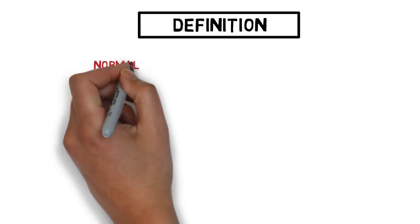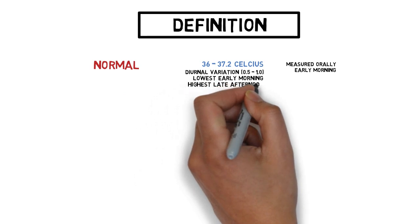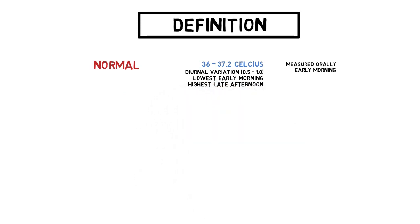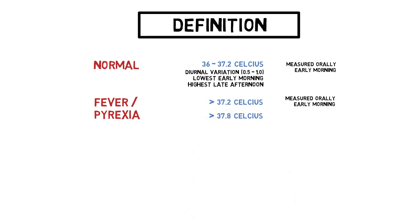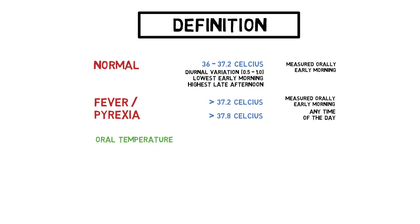The normal body temperature is around 36 to 37.2 degrees Celsius, measured orally in the early morning. It has a diurnal variation of around 0.5 to 1 degree Celsius. The lowest recording is usually in the early morning and highest in late afternoon. So fever is any temperature above 37.2 if measured in the early morning orally, or more than 37.8 degrees at any other time of the day.